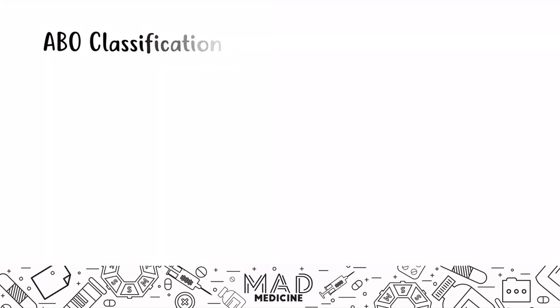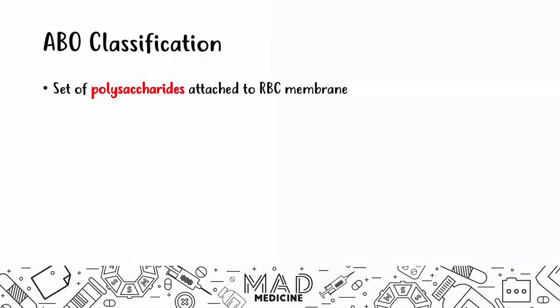Let's talk about the ABO classification. These are a set of polysaccharides that are attached to the red blood cell membrane. It is very important to understand that these are polysaccharides attached to the red blood cells — they are not going through the membrane, they are not intramembranous, they are just attached to the membrane. This is very high yield because it will differentiate ABO from the RH classification.